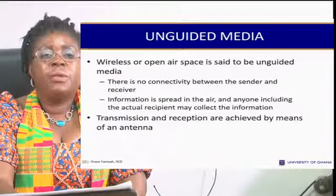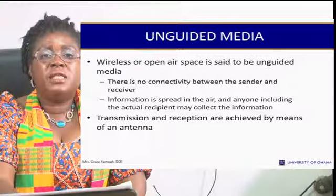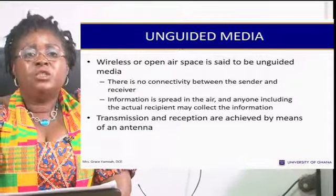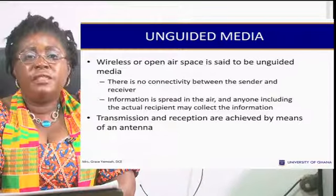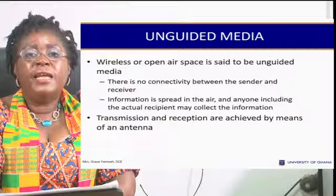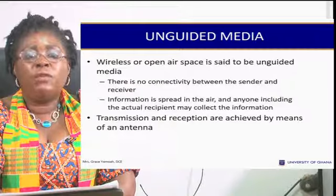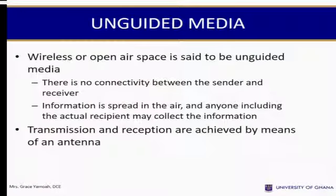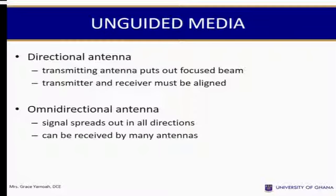Wireless or open air space is referred to as unguided media. There is no physical connectivity between the sender and receiver — information is spread in the air and anyone, including the actual recipient, may collect it. Transmission and reception are achieved by means of an antenna. Types of antennas include the directional antenna, which focuses a narrow beam requiring transmitter and receiver to be aligned, and the omnidirectional antenna, where signals spread out in all directions and can be received by many antennas.